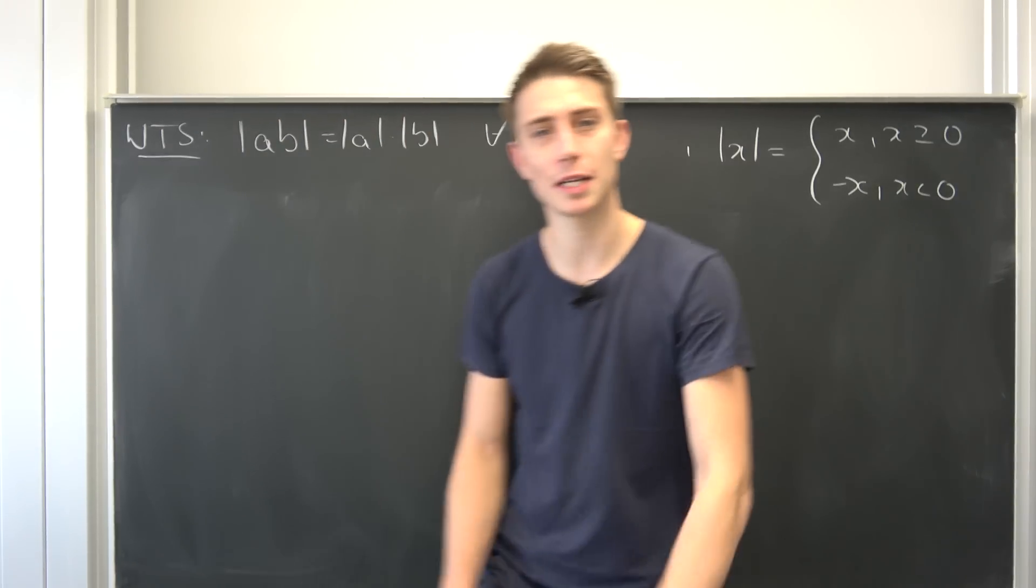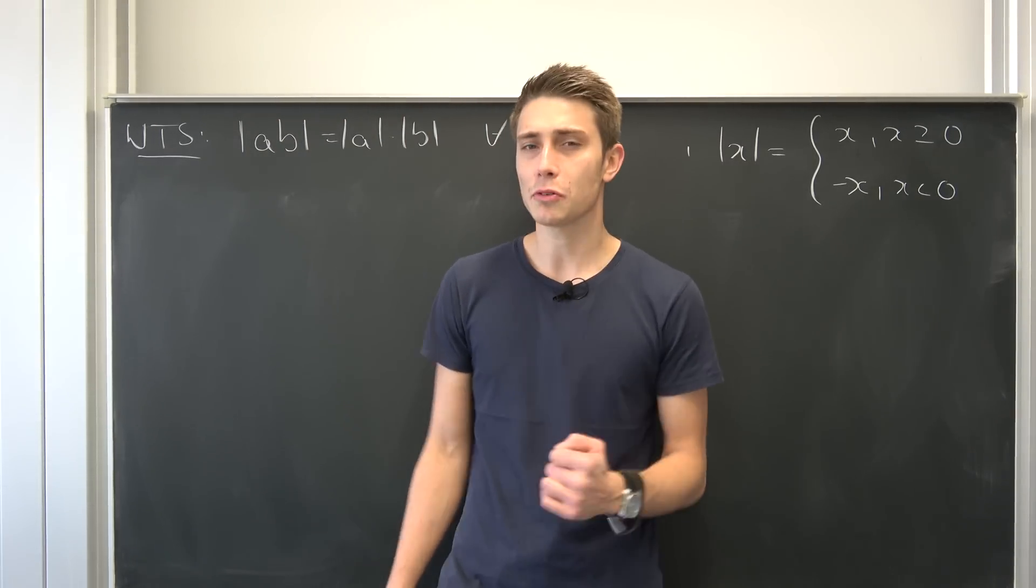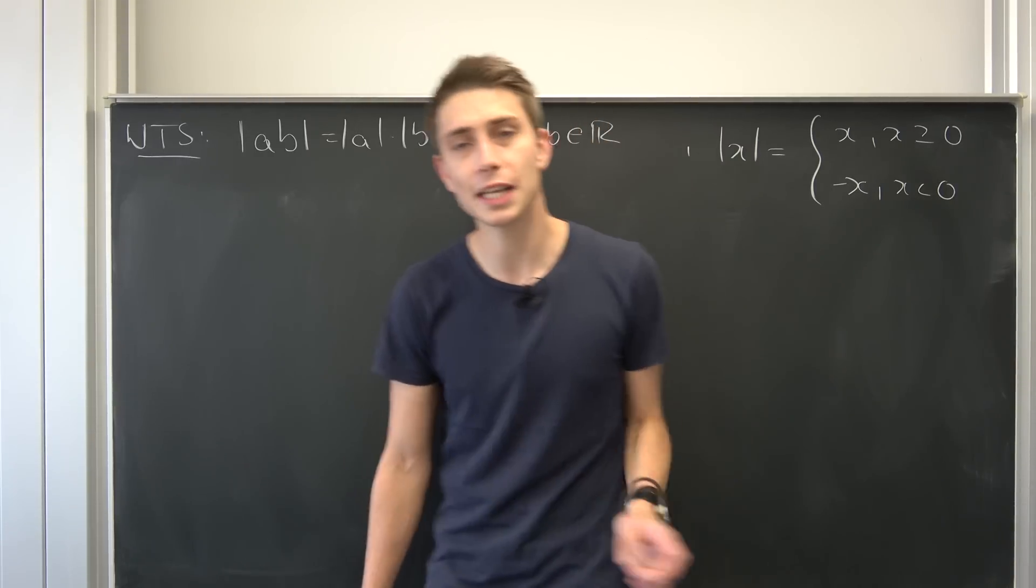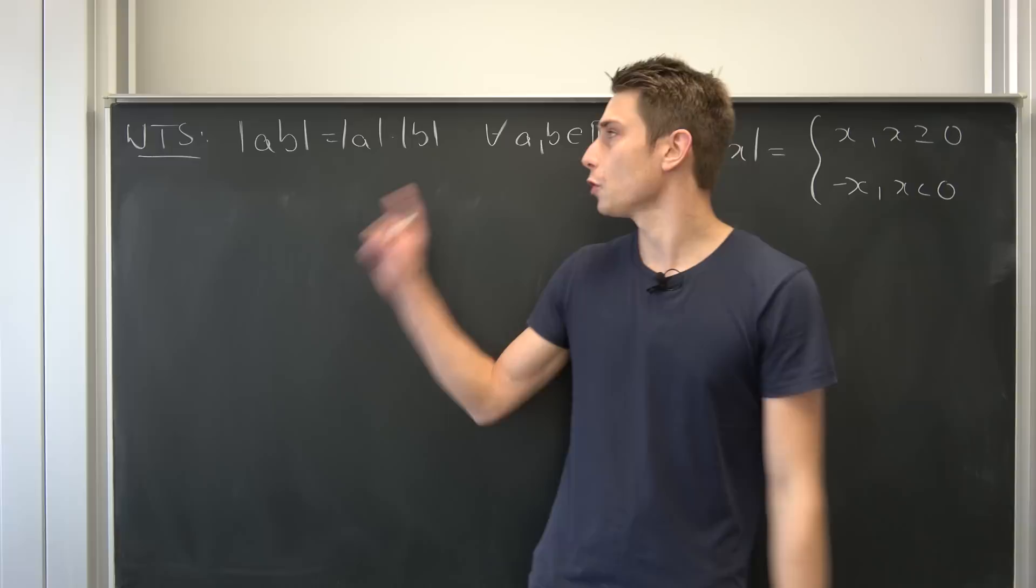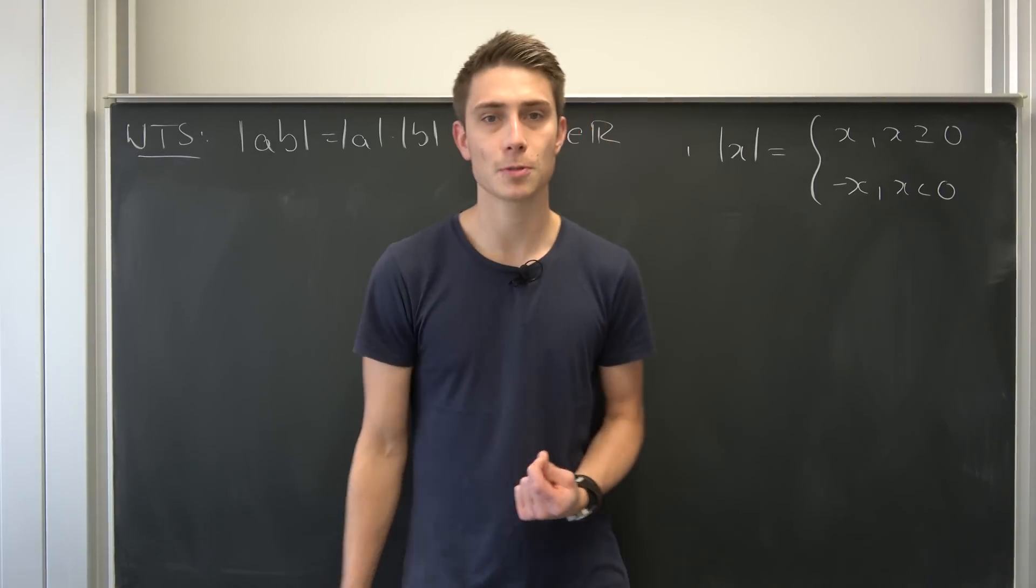Good morning fellow mathematicians. Welcome back to another day on Papa Flemmi's Advent Calendar. And we're going to do something really trivial today. Because we are going to prove that for all the numbers A and B, we have that the absolute value of A times B is the same as the absolute value of A times the absolute value of B.